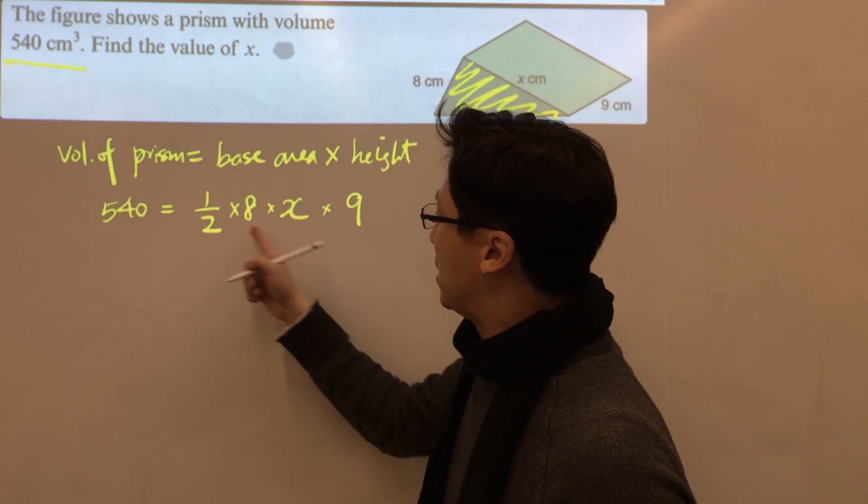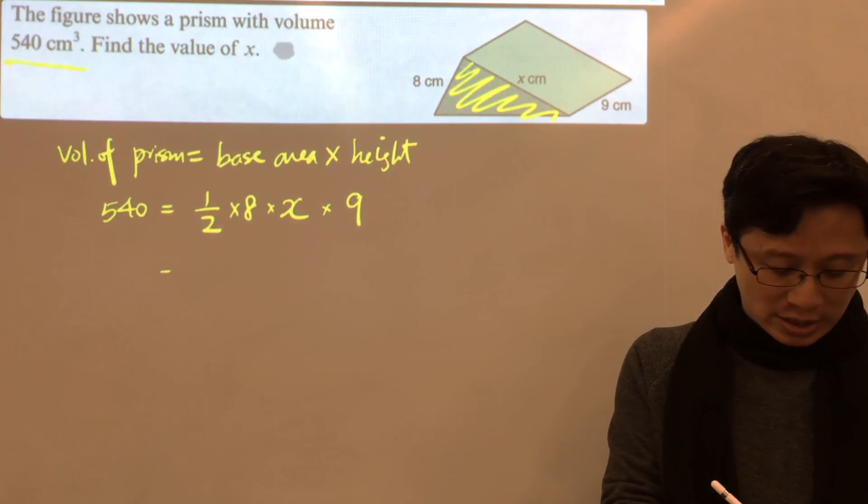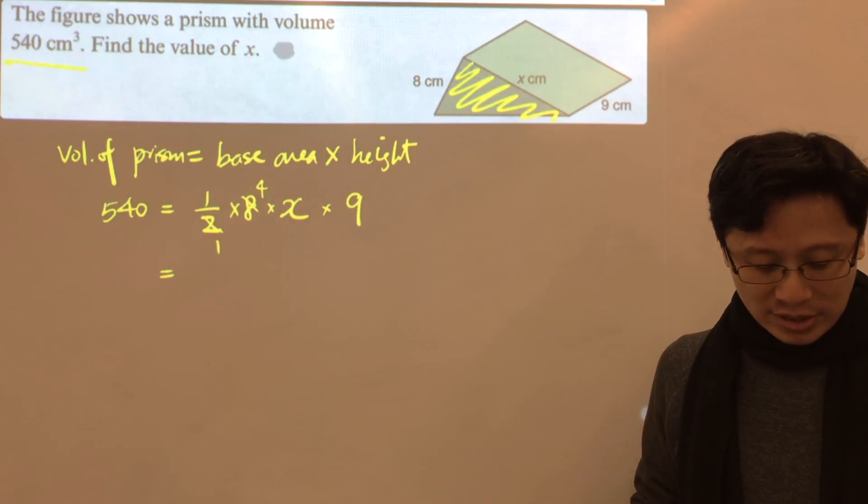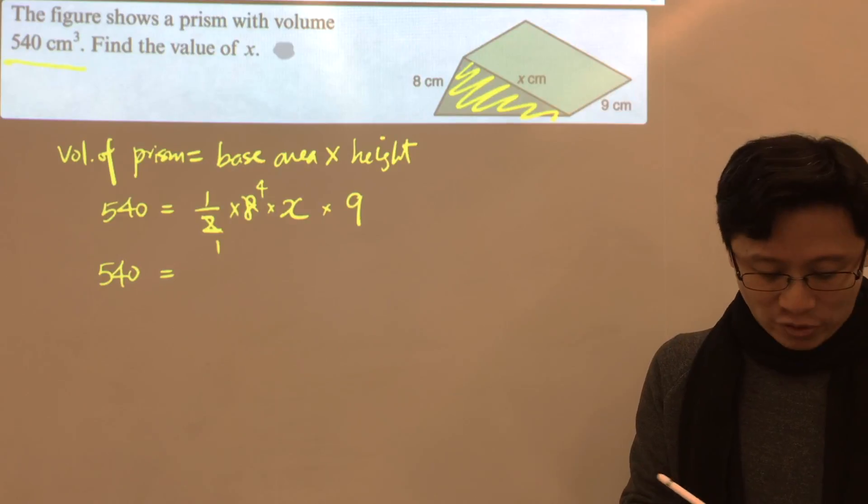we can set up an equation and find the value of x. So this is 2, 8, 4. Cancel this out. 540